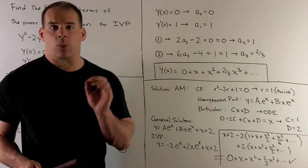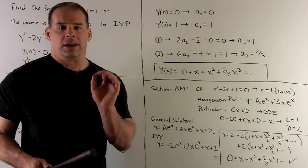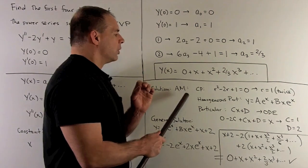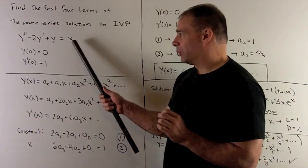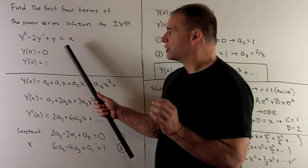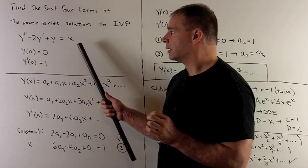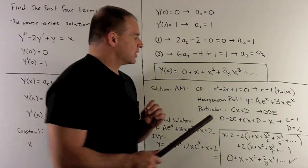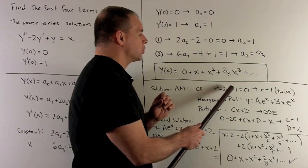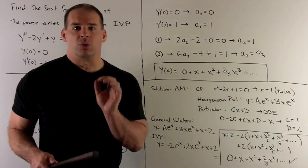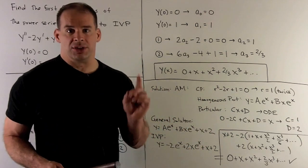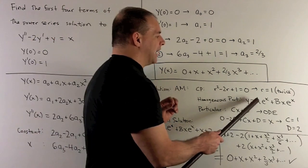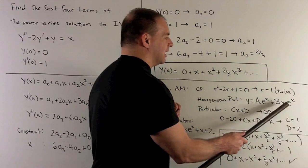Now we want to check our work using the annihilator method. First, we solve the homogeneous equation by setting x equal to zero. The characteristic polynomial is r squared minus two r plus one equals zero, giving a root of one with multiplicity two. So the general homogeneous solution is y equals a e to the x plus b x e to the x.